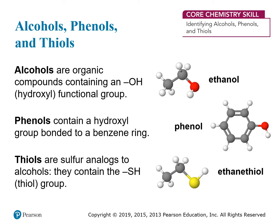Alcohols are organic compounds containing an OH functional group, called the hydroxyl group. You can see it here in this three-dimensional structure as the red oxygen sphere connected to a white hydrogen. This is an example of ethanol, because it has two carbons, so the prefix 'eth' still applies. Phenols are benzene rings that have a hydroxyl group attached to them, so in a sense, they're a special kind of alcohol.